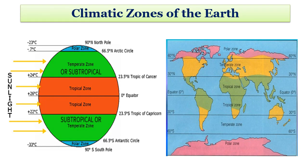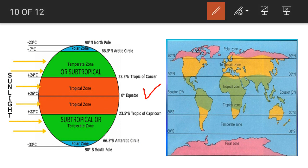Along with studying morphological characters, it is also important to know the distribution of plant species. These are the different climatic zones of planet Earth: the tropical zone, subtropical zone, temperate zone and polar zone. With respect to the map, most parts of India fall in the tropical and subtropical zones, whereas some parts of Jammu and Kashmir are in the temperate zone.